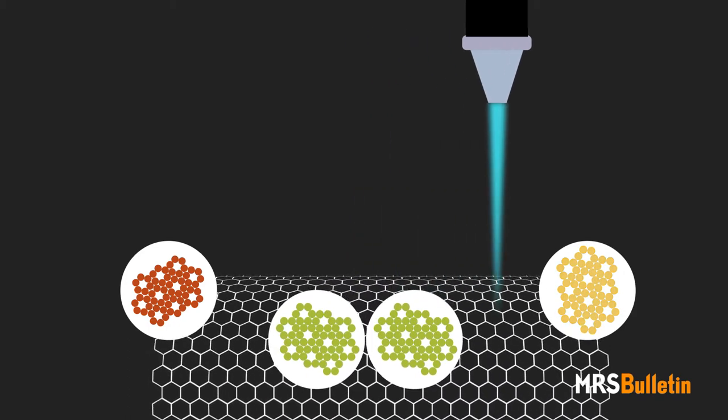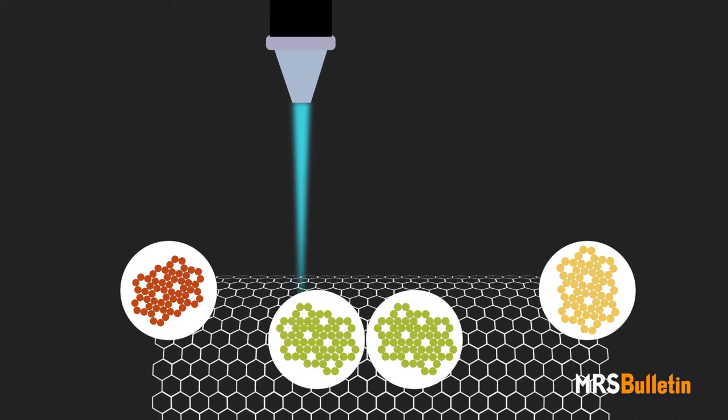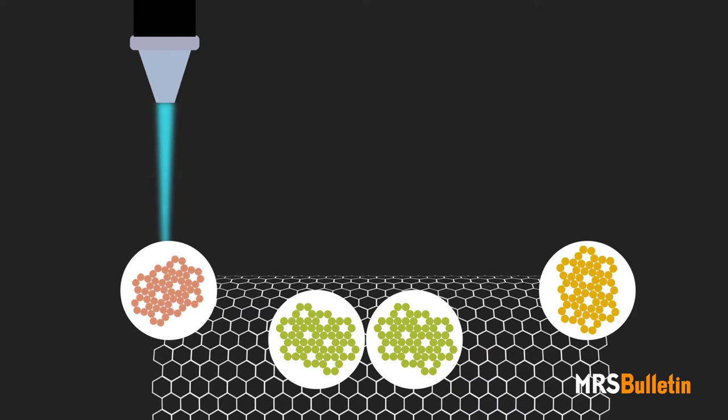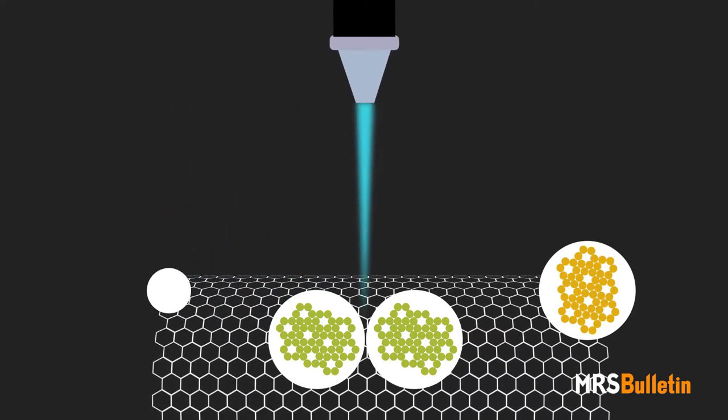Advances in electron microscopy have now made high-resolution imaging of atomic systems routine. Along the way, scientists discovered that electron beams can often damage materials on the atomic level.